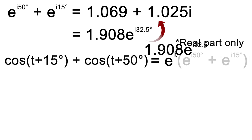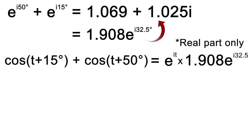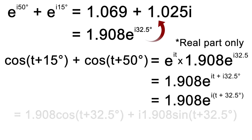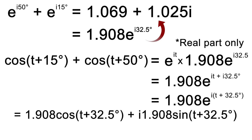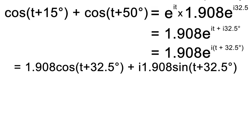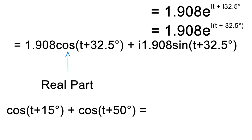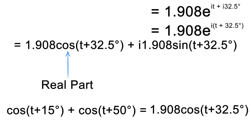Now that we have it, we can substitute it back in. I have two exponentials multiplied, so I get 1.908 times e to the i(t + 32.5), since we can add exponents. Then factoring out an i gives this expression. Using Euler's formula again, we can turn it into cosine and sine. The real part of our answer is 1.908 cosine of (t + 32.5). Now we know that the original question — adding two cosines of different phases — simplifies to this one cosine equation.